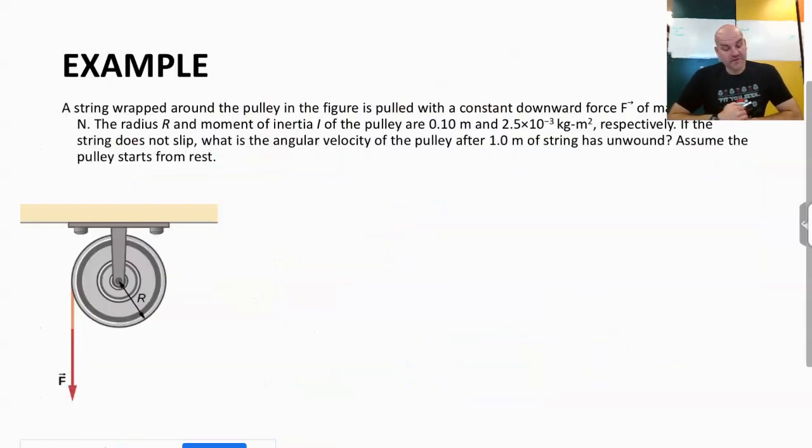All right, so here we have a string wrapped around a pulley in the figure, pulled with a constant downward force of 50 newtons. The radius and the moment of inertia of the pulley are 0.10 and 2.5 times 10 to the negative third kilograms meters squared. If the string does not slip, what is the angular velocity of the pulley after one meter of string has unwound? Assume the pulley starts from rest.